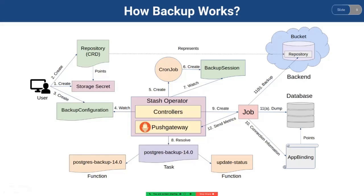The backup job reads the necessary information to connect with the database from the app binding CRD. If you are using KubeDB, KubeDB will automatically create an app binding for your PostgreSQL database. Otherwise, you have to create your app binding manually. Then the job dumps the targeted databases and uploads the output to the backend.